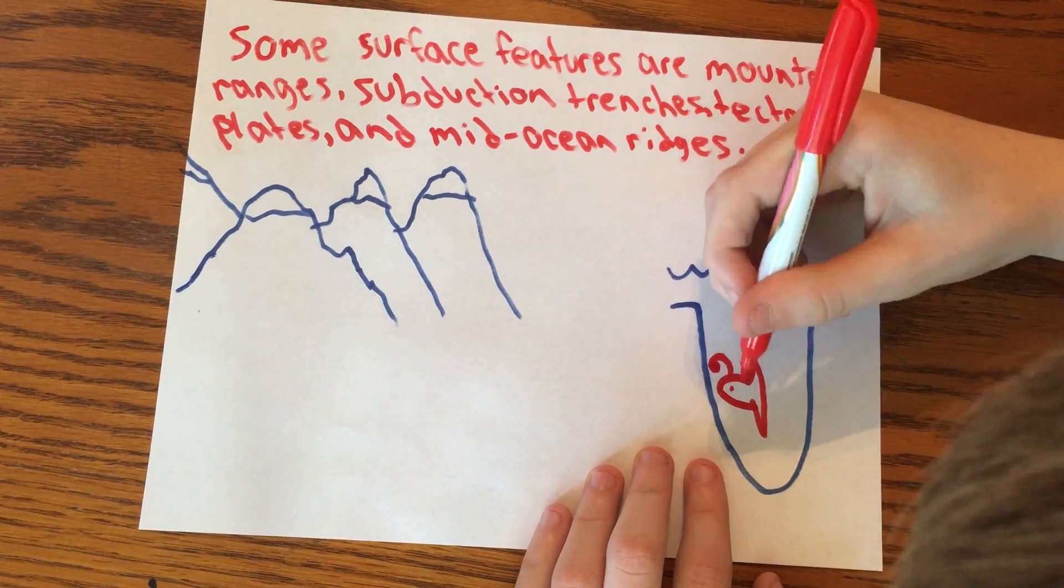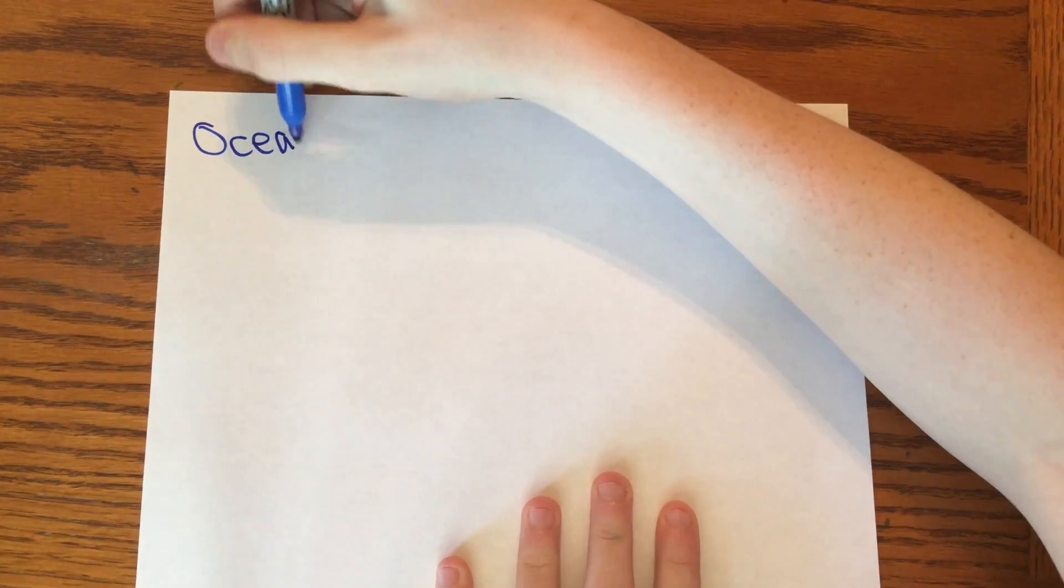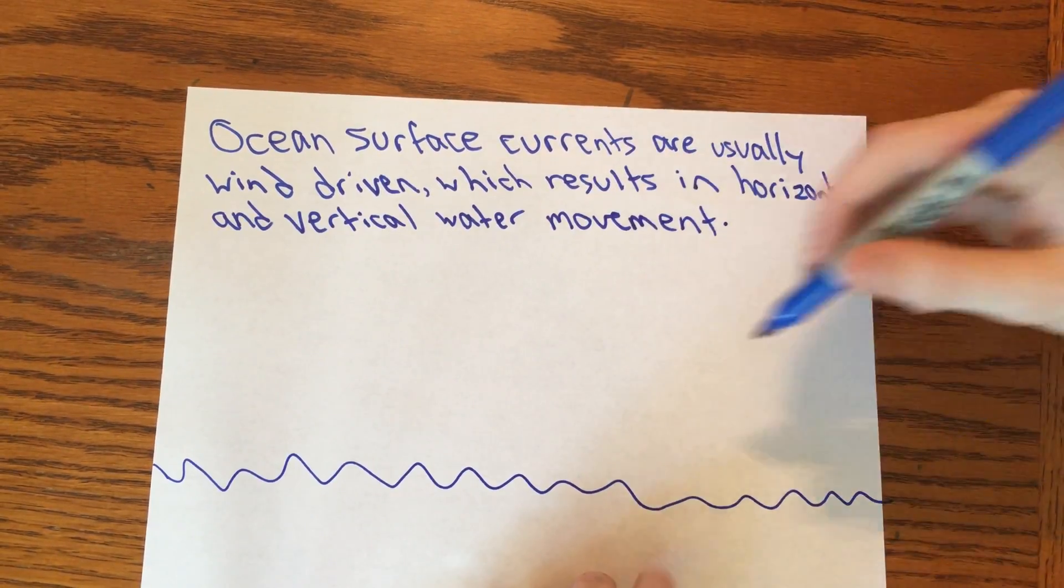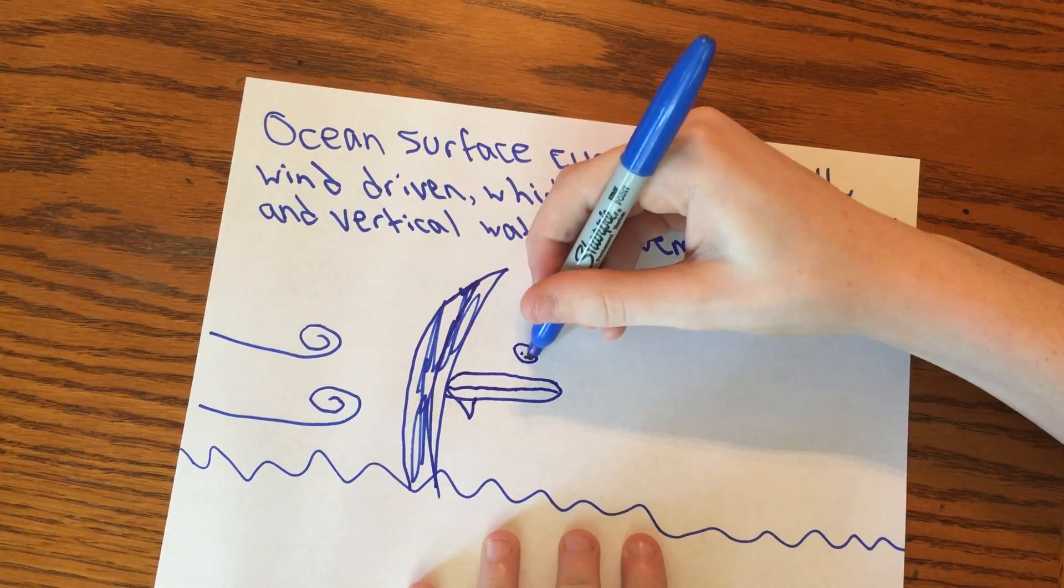Ocean surface currents are usually driven by wind. There are two types of ocean surface currents: horizontal and vertical movements.